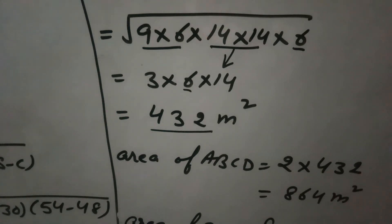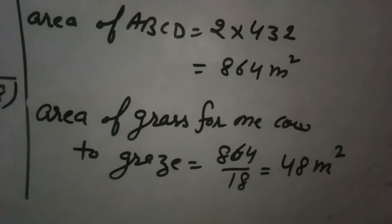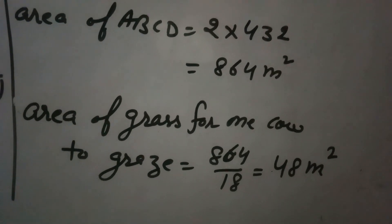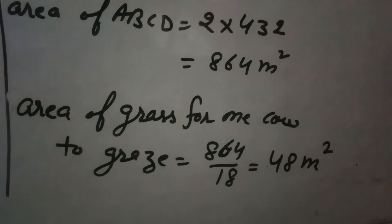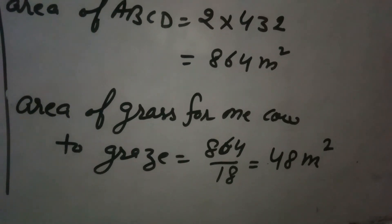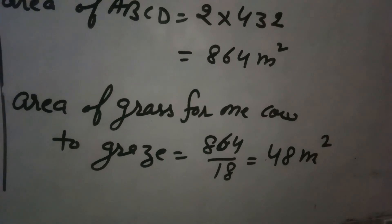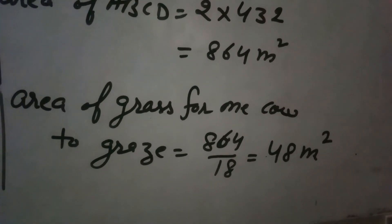So 864 is the total area of this rhombus field, and the area of grass for one cow to graze will be 864 divided by 18, because 18 cows are there. The area of the rhombus is 864 and the area of grass for each cow to graze is 864 divided by 18, which equals 48 meters square. This is the area each cow needs to graze.